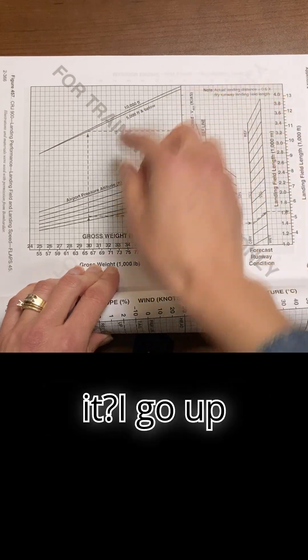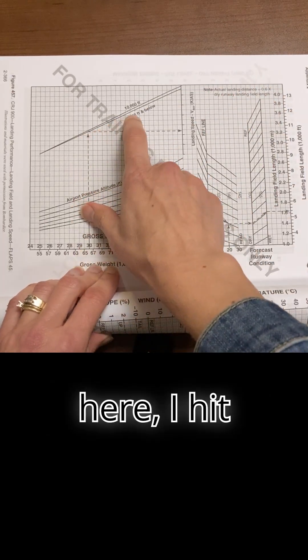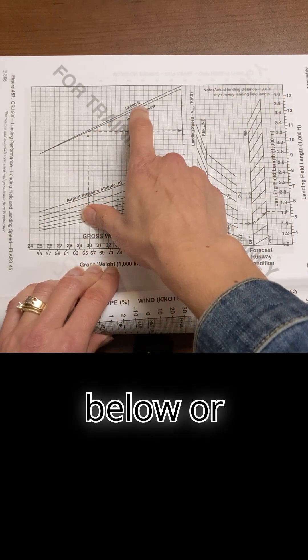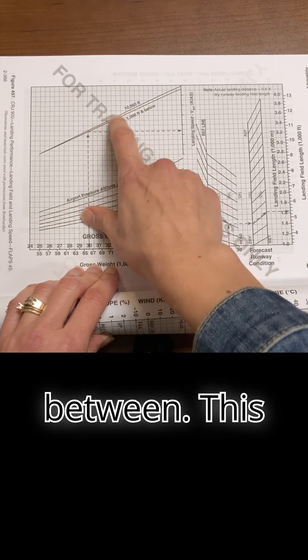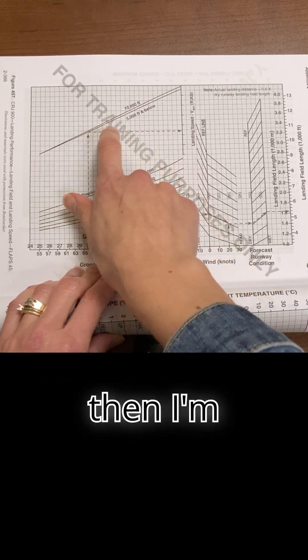You go up here, hit either the 5,000 feet and below or 10,000 feet, or somewhere between - this is for the airport elevation - and then you're supposed to go over here, follow the line, and get your V ref speed. Problem: